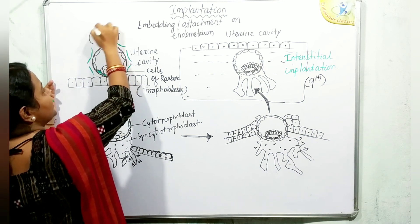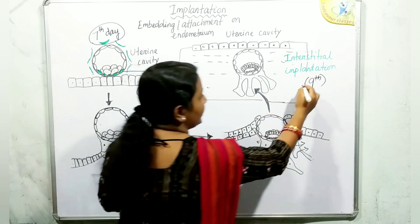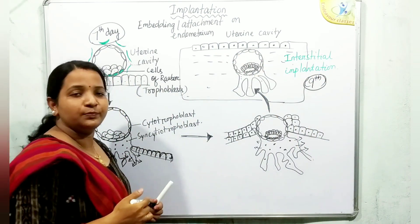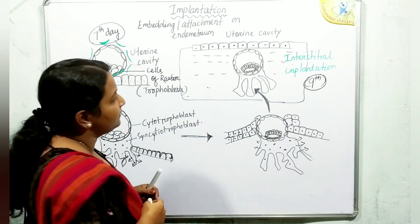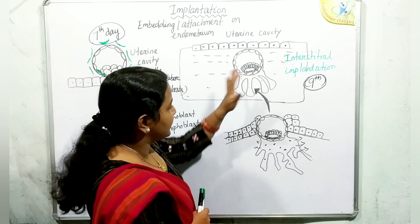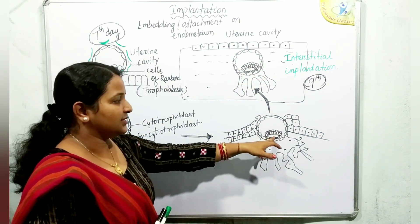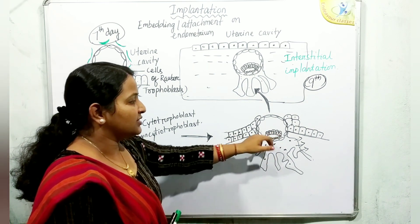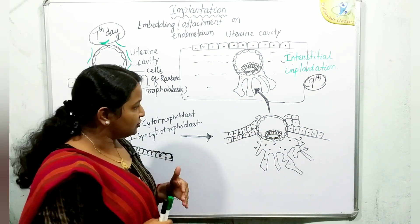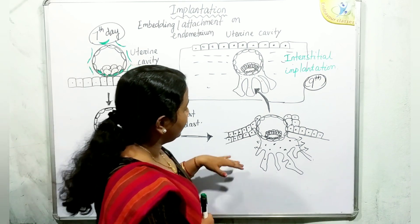Attachment occurs by day 7 after fertilization, and by day 9 after fertilization there is complete burial of the blastocyst. There is also a slight change in the inner cell mass during this period, which we will study in the process of gastrulation.